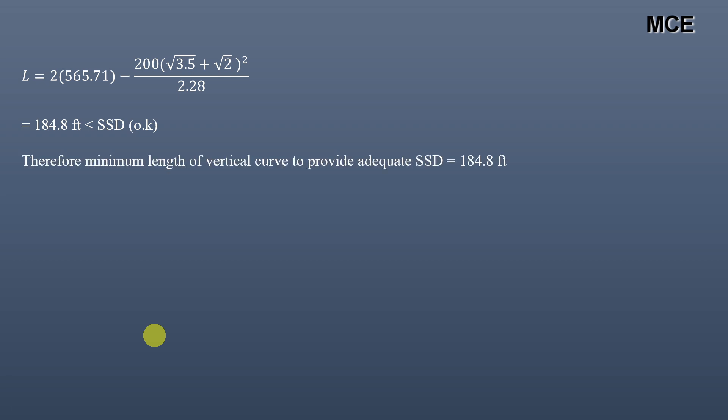We can therefore conclude that the minimum length of the vertical curve to provide adequate stopping sight distance for a design speed of 60 miles per hour is 184.8 feet. To summarize: first calculate the stopping sight distance, then assume whether L is greater or less than SSD, and verify your assumption after calculating.